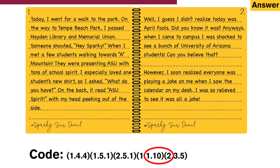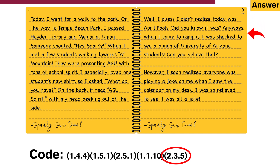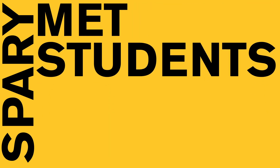Now the final code: 2, 3, 5 — second page, third line: 1, 2, 3. Fifth word: 1, 2, 3, 4, 5 — campus. Sparky met students on campus.